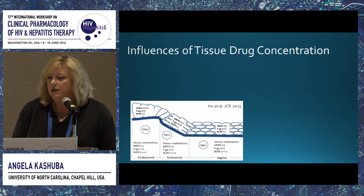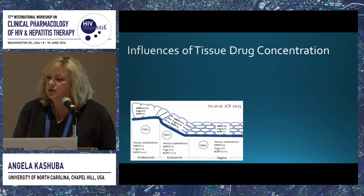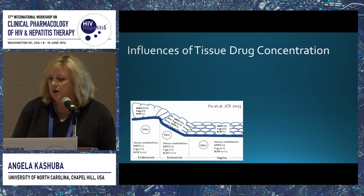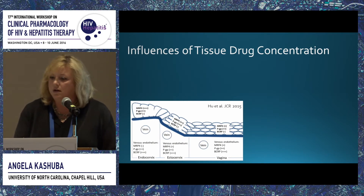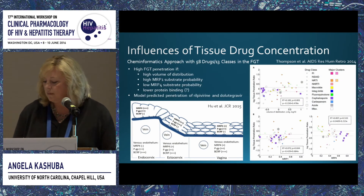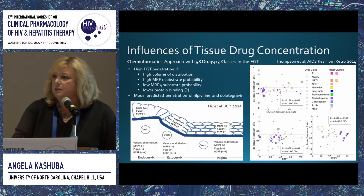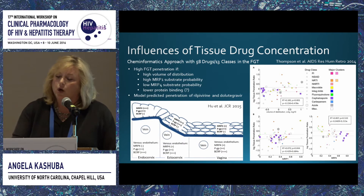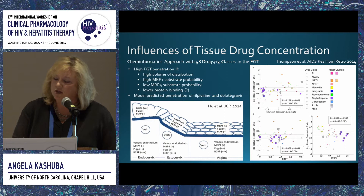So what influences drug distribution in tissues? At least in mucosal tissues, we don't have a good handle on that yet. This cartoon published by Lisa Rohan's group summarizes drug transporters along the female genital tract, moving from vagina to ectocervix to endocervix, with different rates or amounts of expression along that tract. In addition, there are also drug transporters on the venous endothelium. Corbin Thompson published data using a chemioinformatics approach, combing the literature and finding information on 58 drugs in 13 drug classes to evaluate what predicts higher exposure in the female genital tract.